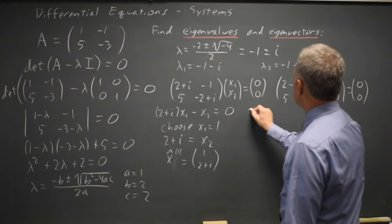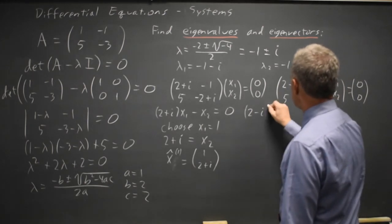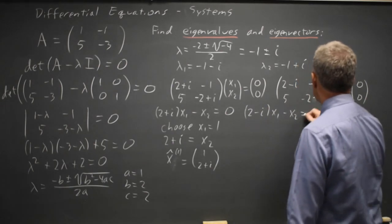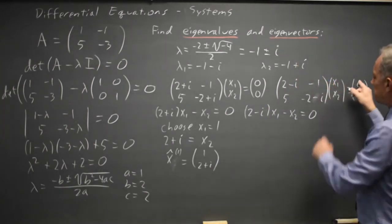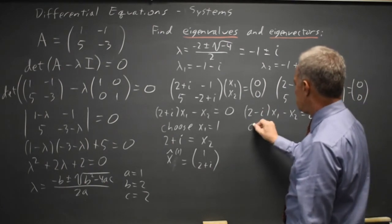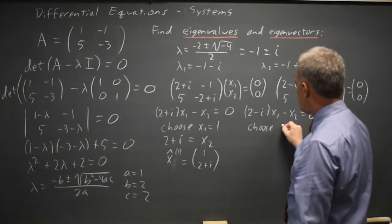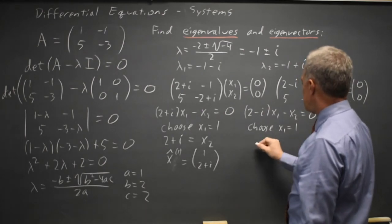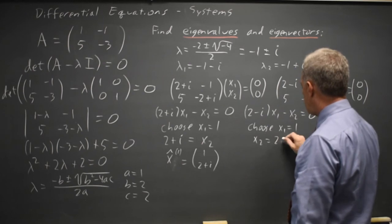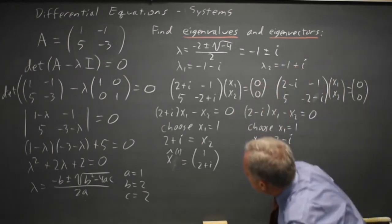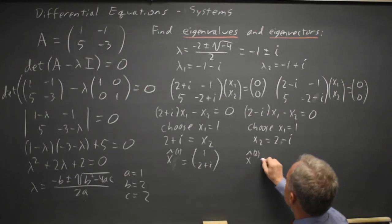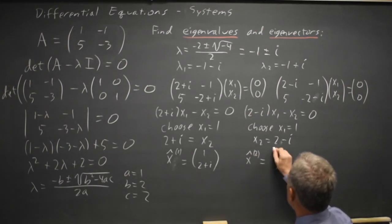The first row gives me (2 minus i)x1 minus x2 equals 0. That's this row times this column equals the first element of my vector on the right. If I choose, again, x1 equals 1, that gives me x2 equals 2 minus i. And my second eigenvector is [1, 2 minus i].